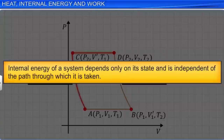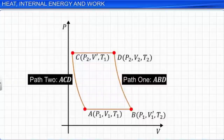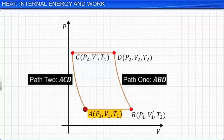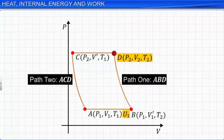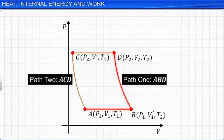Internal energy is a state variable. The internal energy of a system depends only on its state and is independent of the path through which it is taken. For example, let the internal energy at initial state P1, V1, T1 be U1, and at final state P2, V2, T2 be U2. Whether the system is taken through path ABD or ACD, the internal energy in its final state remains U2, independent of the path followed.